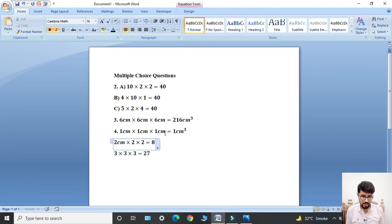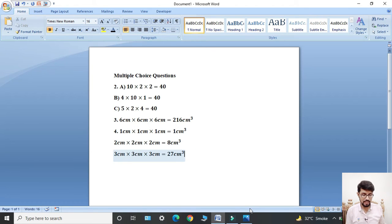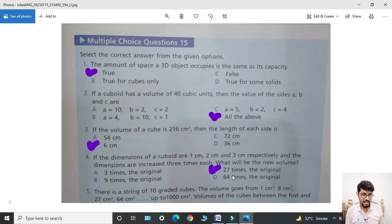For 2 centimeters multiplied three times: 2 cm × 2 cm × 2 cm equals 8 cm cube. For 3 centimeters: 3 cm × 3 cm × 3 cm equals 27 cm cube. The largest value is 27, so the correct answer is 27 times the original.